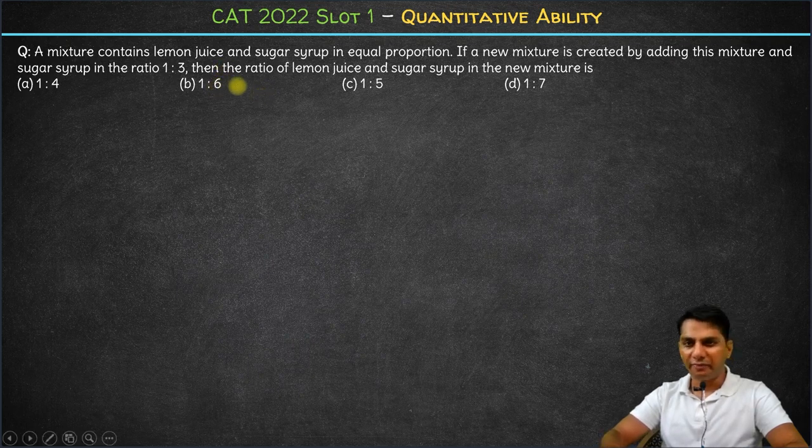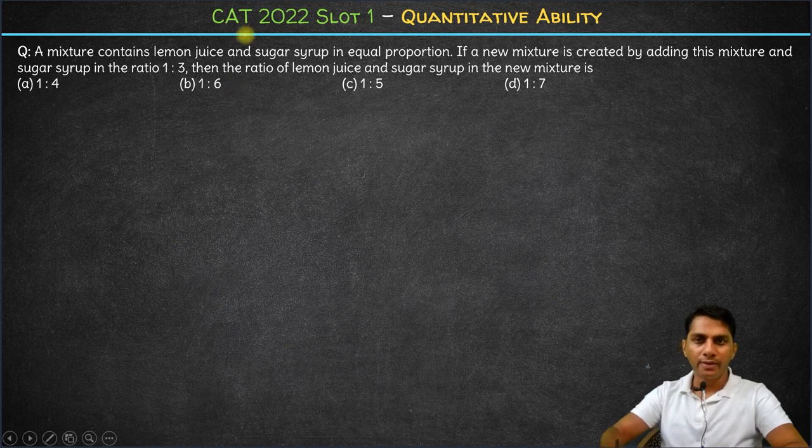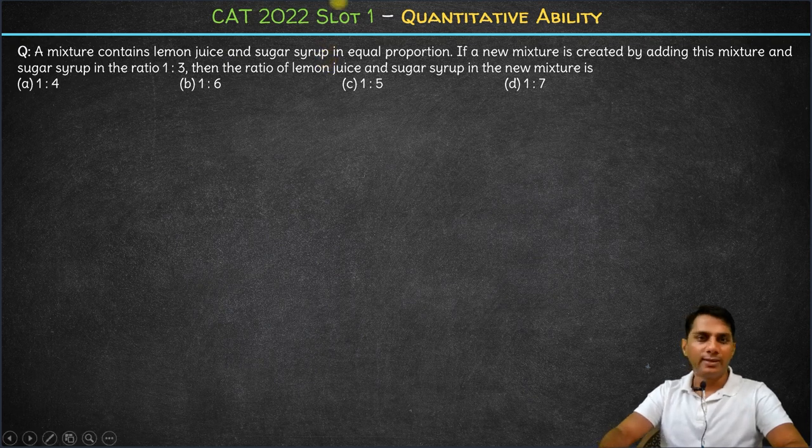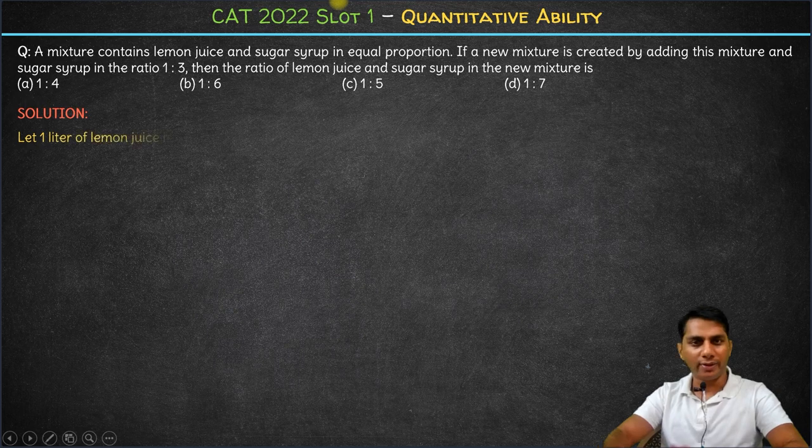Hi, so here we have a very juicy question, a sitter from CAT point of view. A mixture contains lemon juice and sugar syrup in equal proportion. Let's say the lemon juice is one liter and the sugar syrup is also one liter. So one liter of each is mixed.